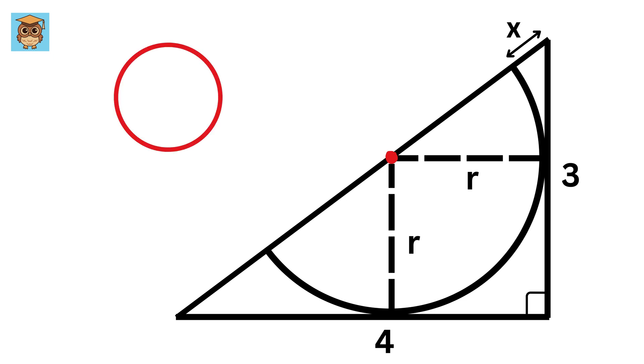We know that for any circle, the radius is always perpendicular to the tangent line. Therefore, this will be 90 degrees. And similarly, this will also be 90 degrees.